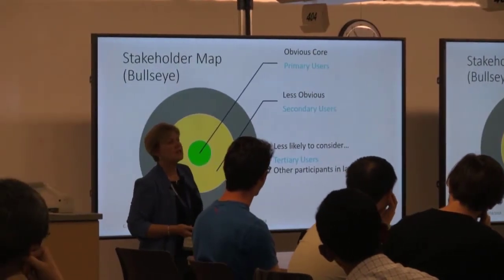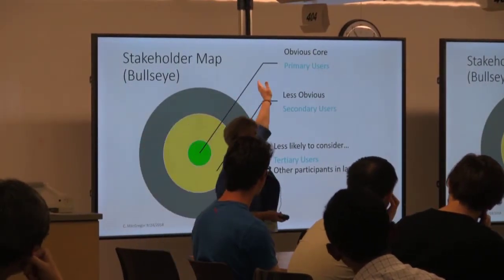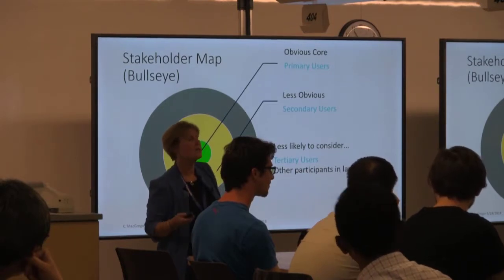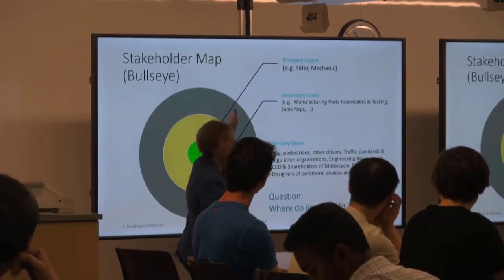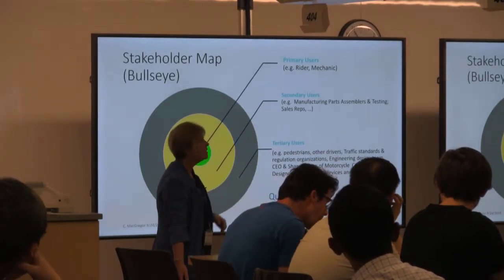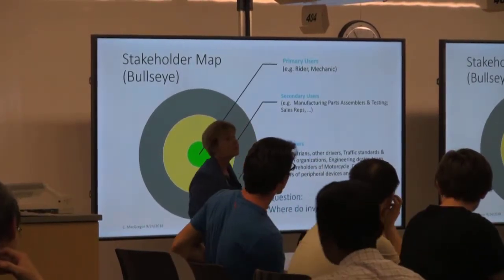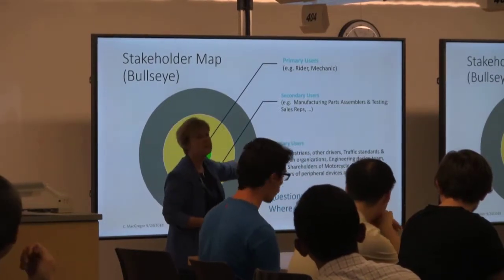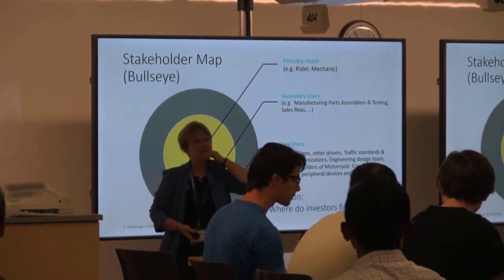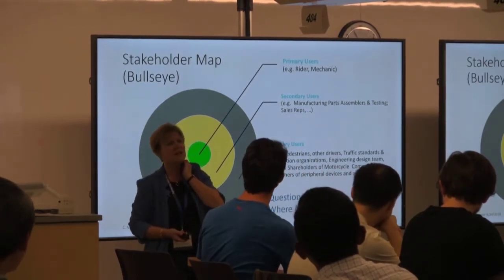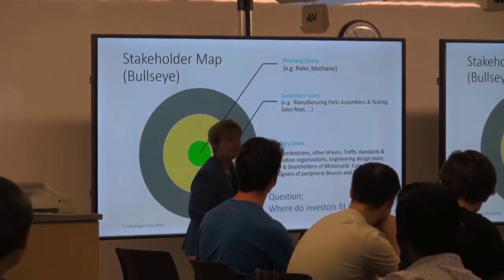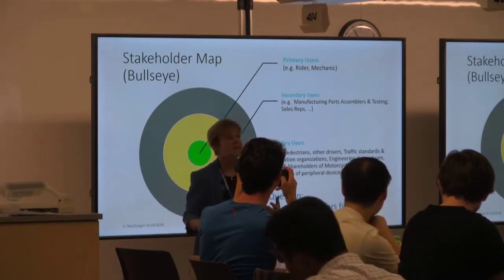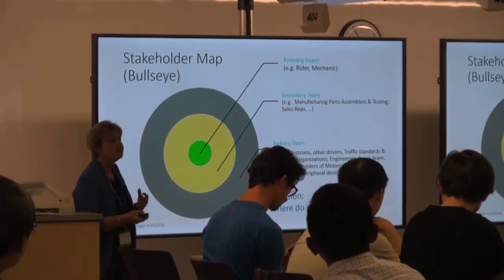If for your own project the farthest you got was just the obvious, you need to be rethinking it — because your design is going to be touched by other people. Primary users: the rider and the mechanic. Secondary users: manufacturing, parts assemblers, testers, sales reps. Tertiary users: pedestrians, other drivers, traffic standards and regulations — that's one people often forget until prompted. Have you actually checked the standards on whatever you're designing?